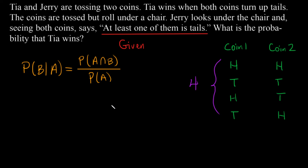And when you do these kinds of questions, you really do have to see or ask yourself, was I given anything? And what was it that I was given? So we're looking for the probability that Tia wins, i.e. both coins are tails, given that at least one is a tail.